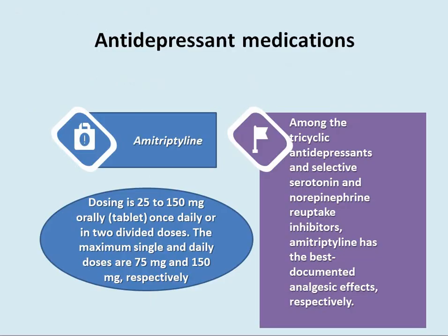Antidepressant medication — specifically amitriptyline — is well known in pain treatment. Among tricyclic antidepressants and SNRIs, amitriptyline has the best documented analgesic effect. Dosing is 25–150 mg orally, once daily or in two divided doses. Maximum single and daily doses are 75 mg and 150 mg respectively.